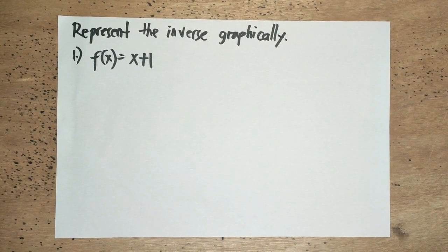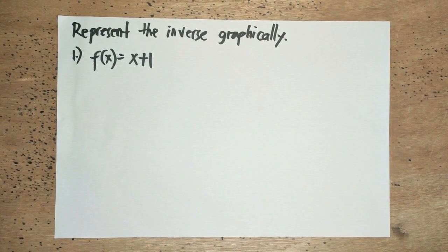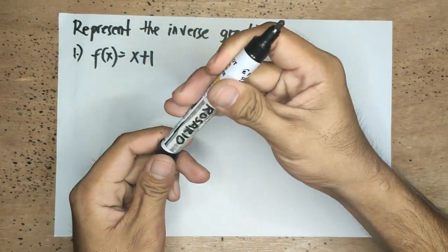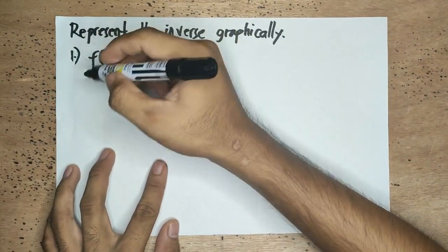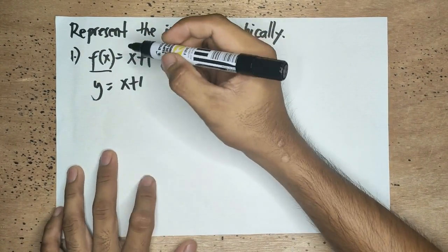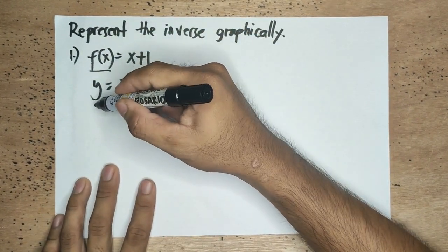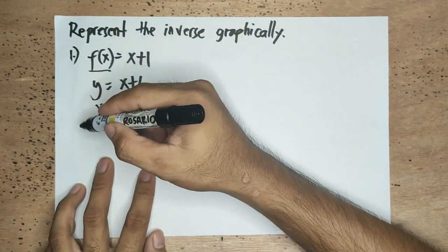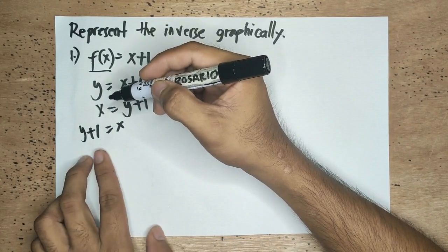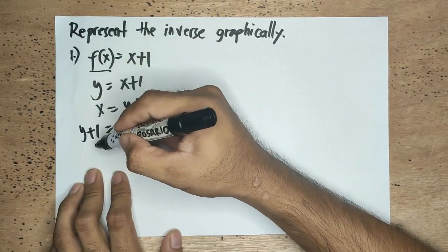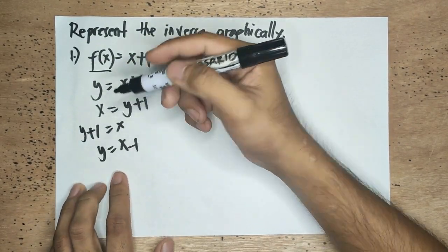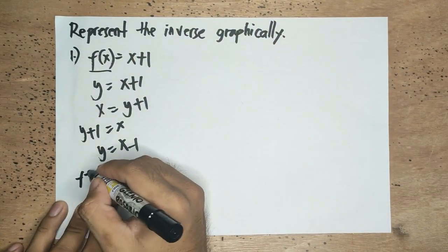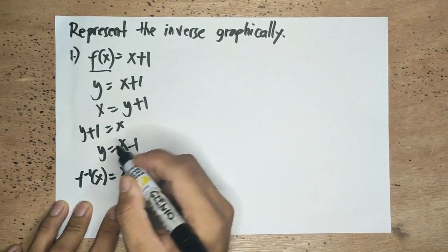In this example, we represent the inverse of the given functions graphically. First step: we replace f(x) using y, so y is equal to x plus 1. Second step: we interchange the variables — y becomes x and x becomes y. Since they are equal, we can swap their positions, giving us y plus 1 equals x. Transposing positive 1, it becomes negative 1. So our inverse function is f⁻¹(x) = x − 1.